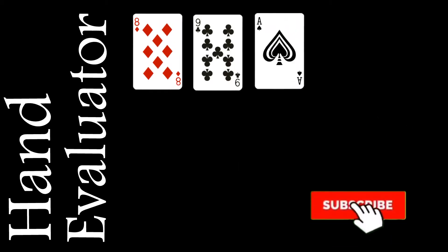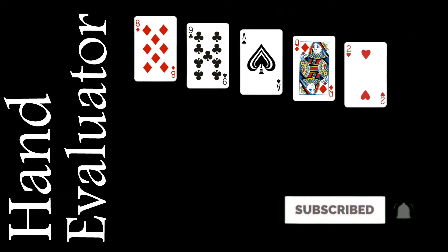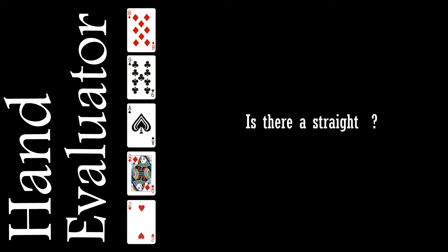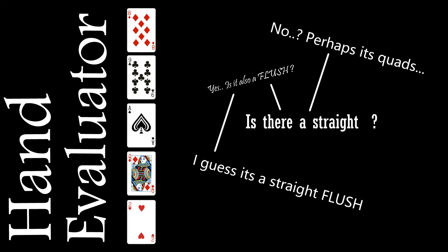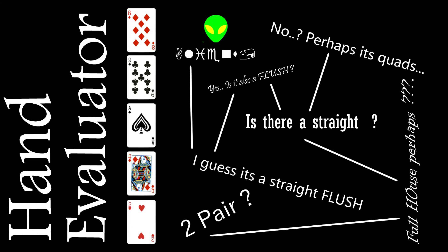Typically when people start out they build what are known as naive evaluators which involve sorting and rearranging the cards as well as some logic which tries to run through all the different possibilities, but ultimately this tends to be a bit frustrating.